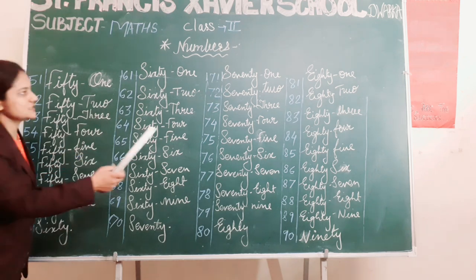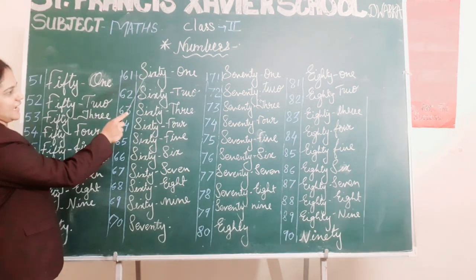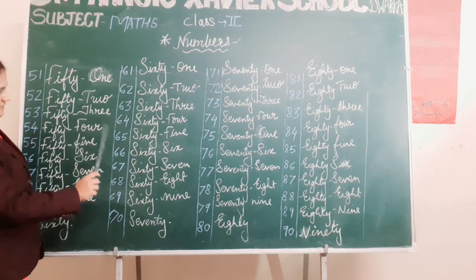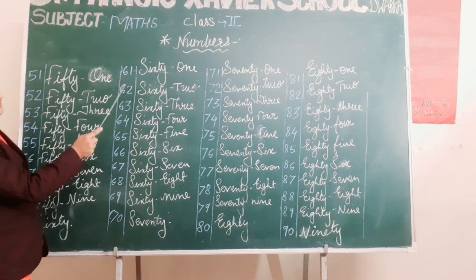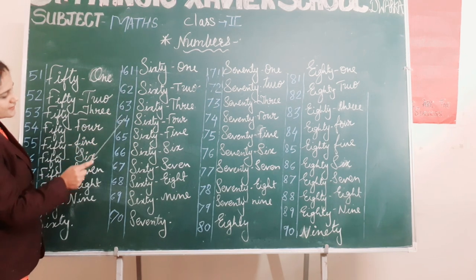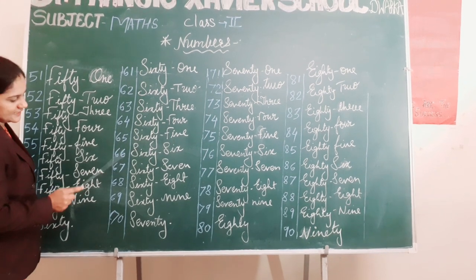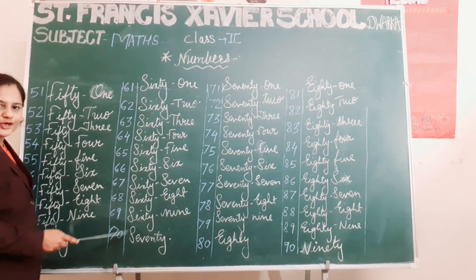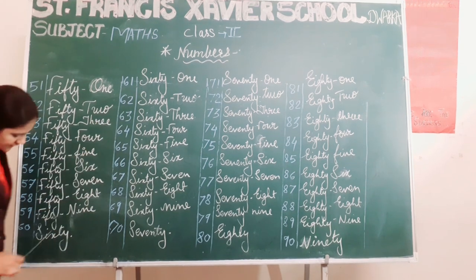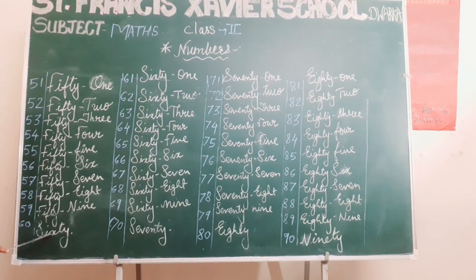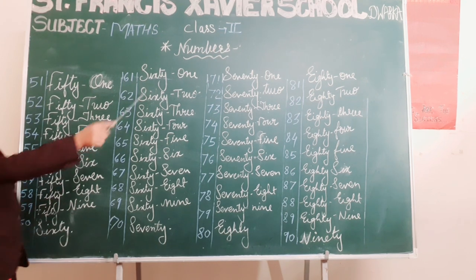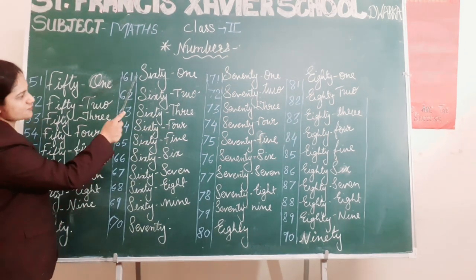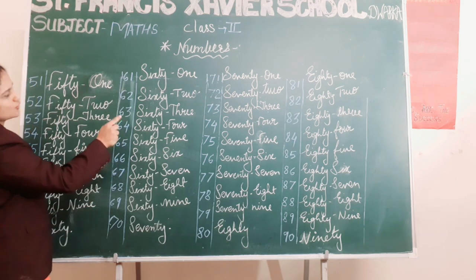After the number 60 comes the number 61: S-I-X-T-Y O-N-E, 61. After number 60 there is 61, 62, 63, 64, 65, 66, 67, 68, 69, 70. As you had learned the spelling of 60 — S-I-X-T-Y — you just have to add the spelling from 1 to 9. So 61: S-I-X-T-Y O-N-E, 61.